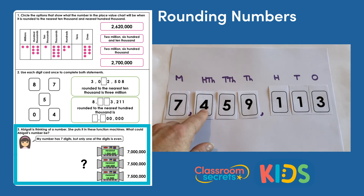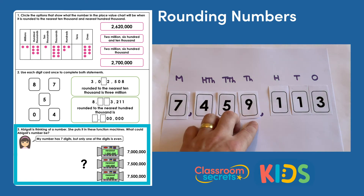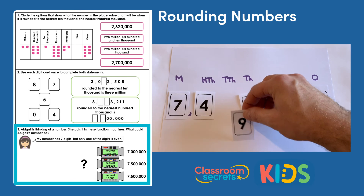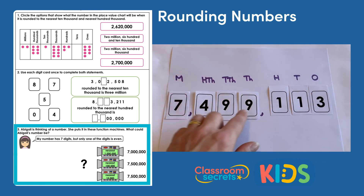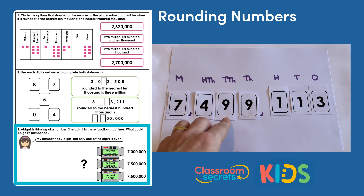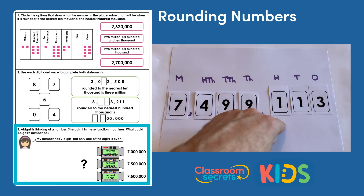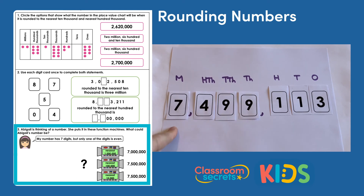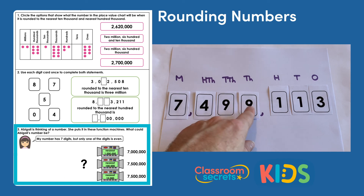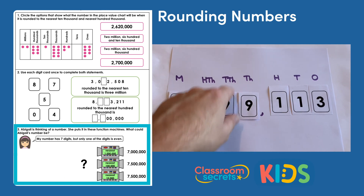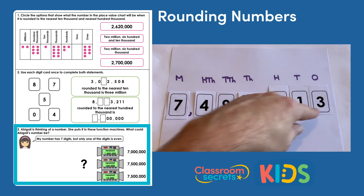What we need to do is change that thousands digit to a nine, so that when we look at it we round up to seven million, five hundred thousand to the nearest ten thousand. So now we have seven million, four hundred and ninety-nine thousand, one hundred and thirteen. Checking: rounded to the nearest million, we round down to seven million. Rounded to the nearest hundred thousand, we round up to seven million, five hundred thousand. And rounded to the nearest ten thousand, because we've got a nine in the tens of thousands, we also round up to seven million, five hundred thousand. All three function machines check out.